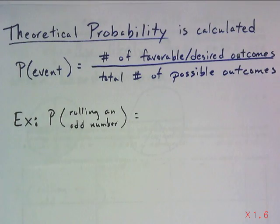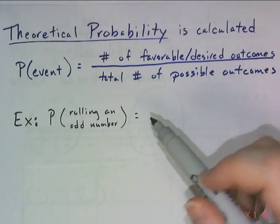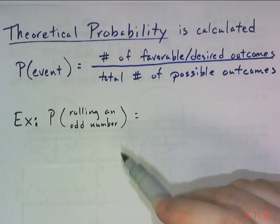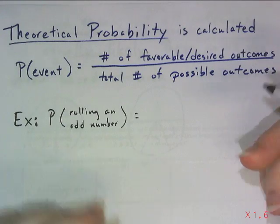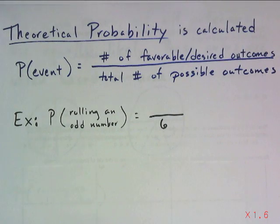So when I'm rolling a die, which is the single form of dice, right - dice is plural, but die is single - and I want to roll an odd number. On one single die, there are six possible outcomes: one, two, three, four, five, six.